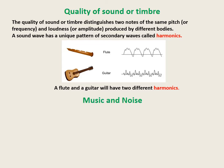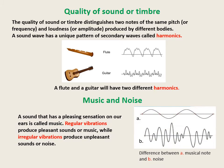Music and noise. Some sounds are pleasant to our ears whereas some are unpleasant. For example, the sound of a violin is pleasant but the sound of traffic is not. A sound that has a pleasing sensation on our ears is called music. Musical sounds such as those of a guitar or a drum produce pleasing sounds due to regular vibrations. A sound unpleasant to our ears is called noise. Noise is produced by irregular vibrations. Sounds of traffic and voices of people in a crowd are examples of noise.